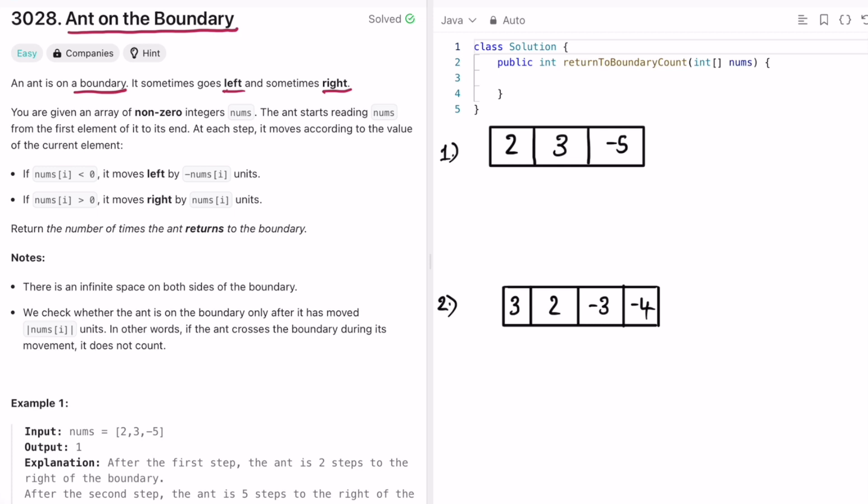You are given an array consisting of non-zero elements and the array's name is nums. The ant starts reading nums from left to right, that is from the starting element to its end, and at each step it moves according to the value of the current element.